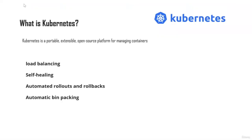Now let's talk about what Kubernetes is. Kubernetes is a portable, extensible open source platform that is used for managing containers. Some of the tasks that Kubernetes can do for you include load balancing of your containers, self-healing - meaning if one of your containers goes down, Kubernetes can help create or recreate a new container in place of the old one. It can also do automated rollbacks and rollouts for newer versions, and it also helps in automatic bin packing, which configures how much CPU and memory each container should get.